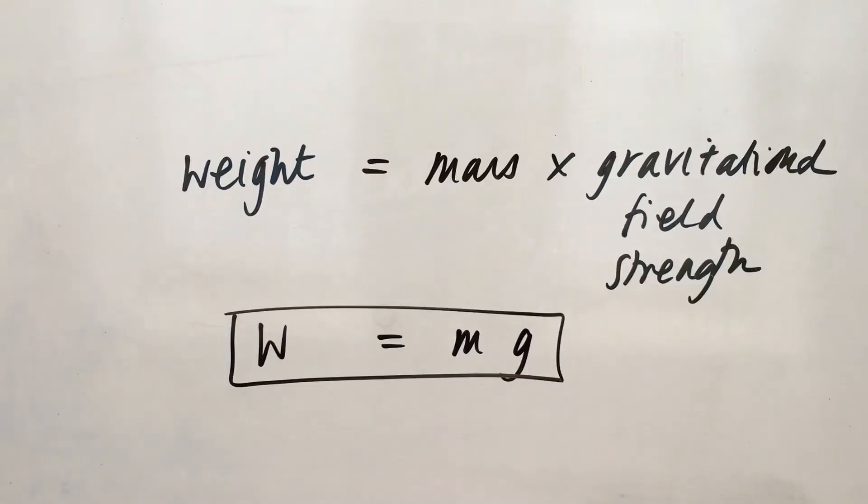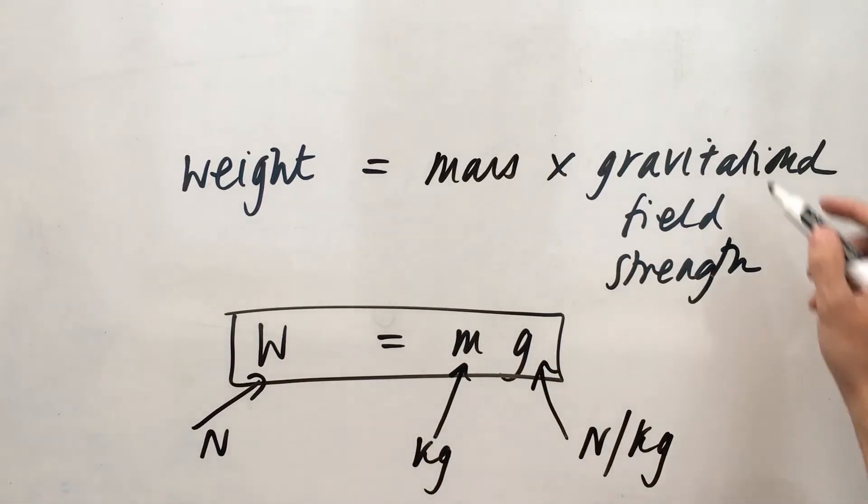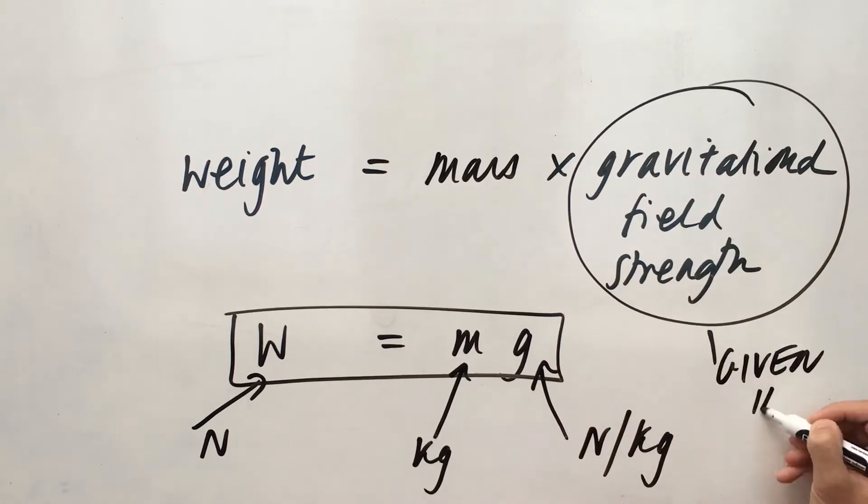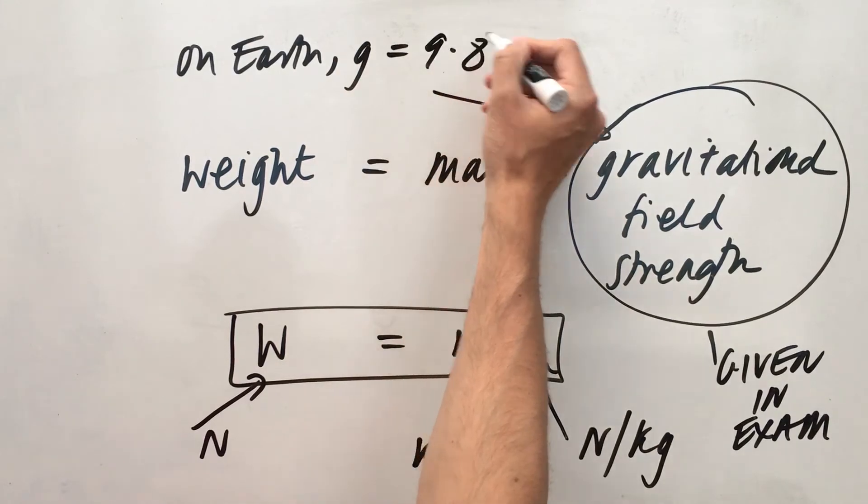Weight is measured in newtons. The mass is measured in kilograms. And gravitational field strength is measured in newtons per kilogram. And you will always be given the gravitational field strength in any calculations that you need to know. On Earth, it's 9.8 newtons per kilogram.